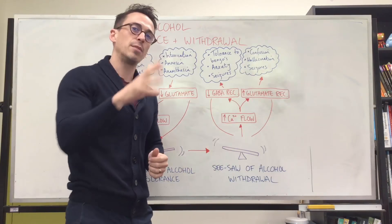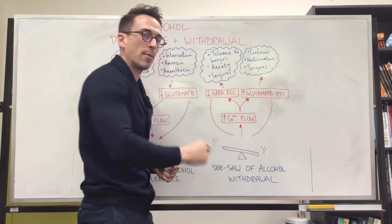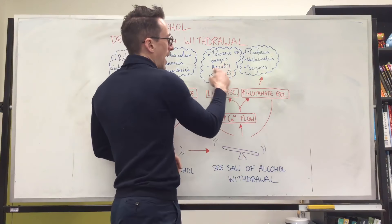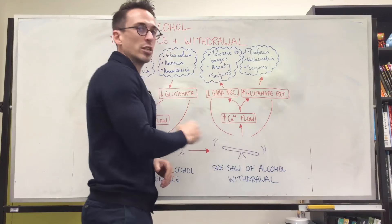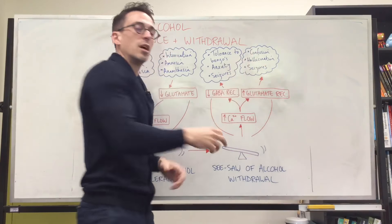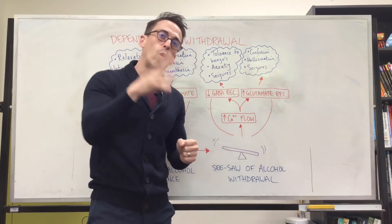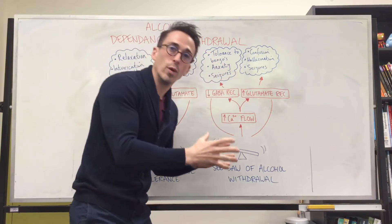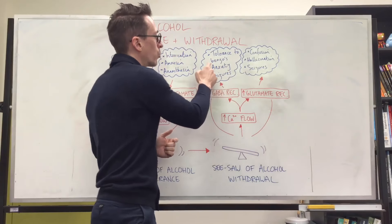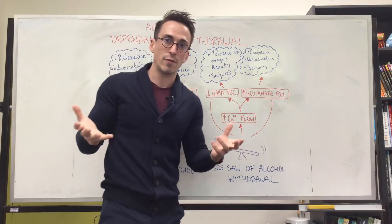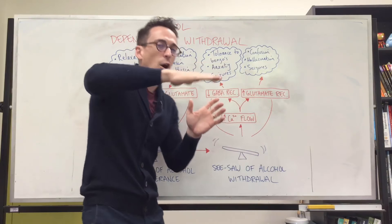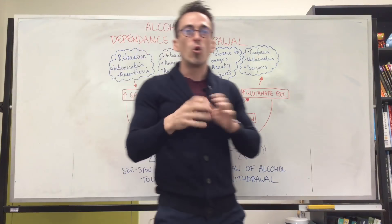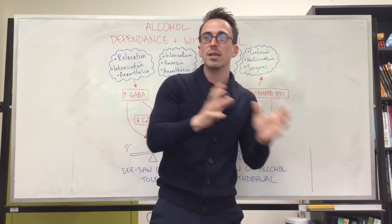Too much glutamate binding is stimulating neurons, not enough inhibitory GABA, and too much calcium flowing in. This ends up resulting in anxiety, seizures, hallucinations, and confusion — the brain is being bombarded by stimulatory neurotransmitters. One of the ways individuals are managed when being withdrawn from alcohol is through benzos — benzodiazepines — because they bind to these receptors and help balance that seesaw out during the withdrawal phase. This has been a quick run through of alcohol tolerance and withdrawal.